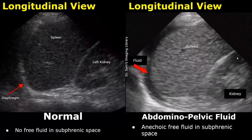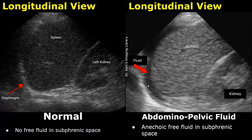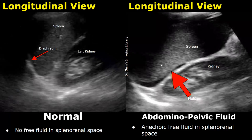Now we go over to the left upper quadrant to scan the left pleural space, subphrenic space, and the splenorenal space. In the normal image, no fluid is seen below the diaphragm, within the pleural space, or between the spleen and left kidney. In this image we see free fluid in the subphrenic space — anechoic fluid is seen between the diaphragm and the spleen. In this image we can also see anechoic fluid between the spleen and left kidney.